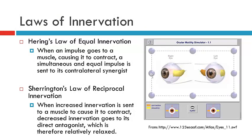On the other hand, we have Sherrington's Law of Reciprocal Innervation. This indicates that when an increased innervation is sent to a muscle to contract, what must happen at the same time is that the ipsilateral antagonist, or the direct antagonist, must relax, and therefore there must be a decreased amount of innervation that goes to this muscle.